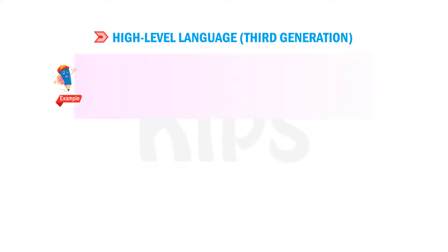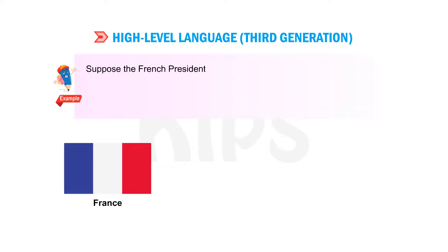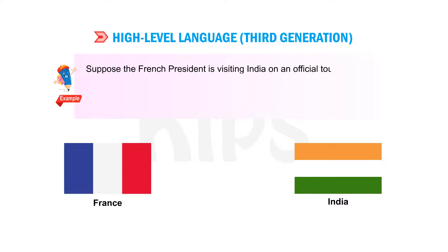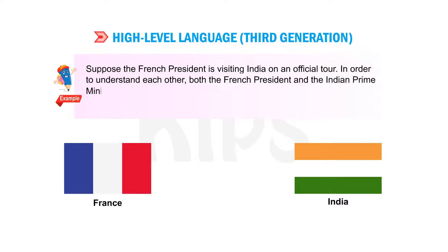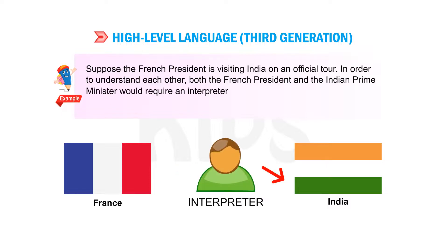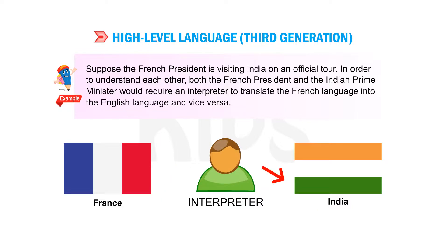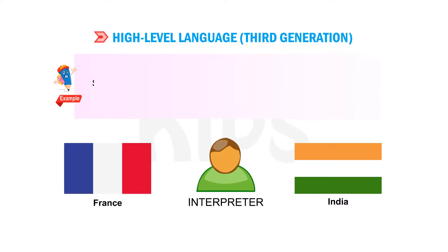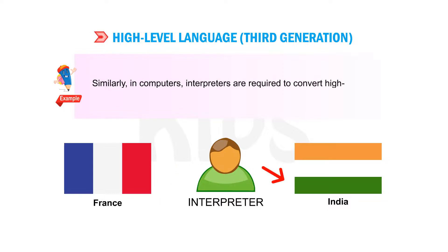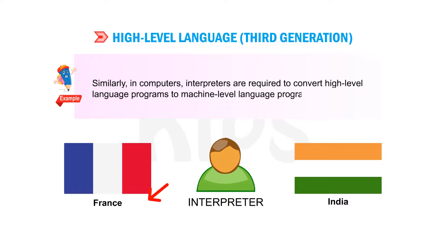For example, suppose the French president is visiting India on an official tour. In order to understand each other, both the French president and the Indian prime minister would require an interpreter to translate the French language into the English language and vice versa. Similarly, in computers, interpreters are required to convert high-level language programs to machine level language programs.